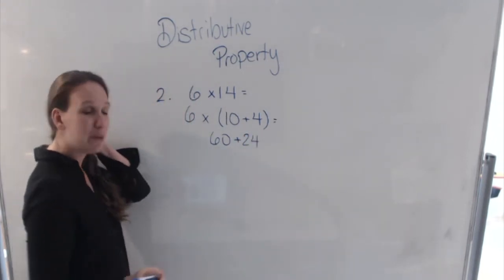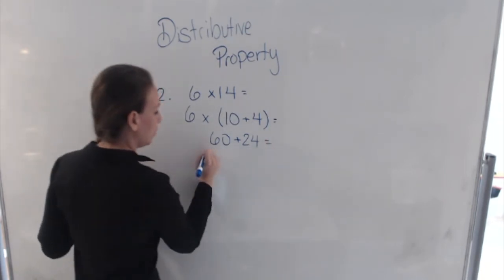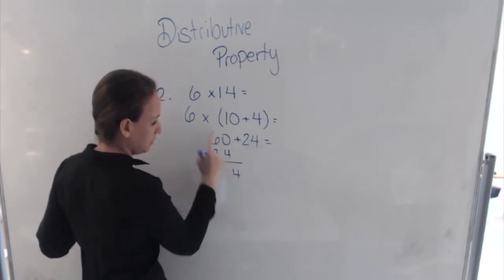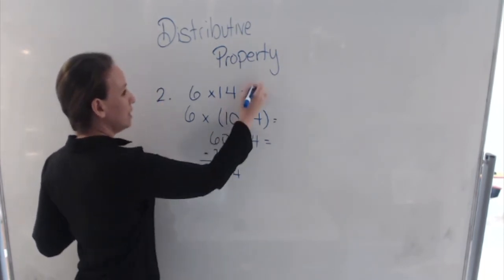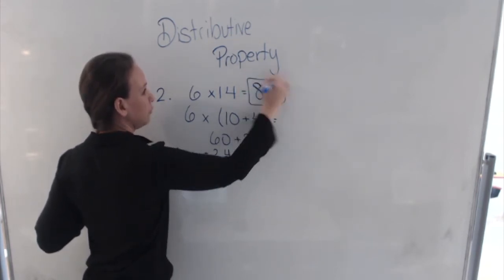And now we can add together 60 plus 24. So, plus 24, and that gives me, 6 plus 2 is 8, 84. So, 6 times 14 is 84.